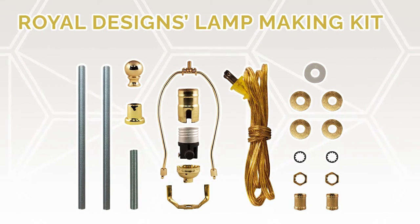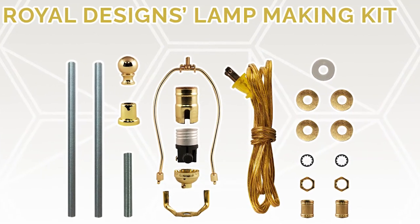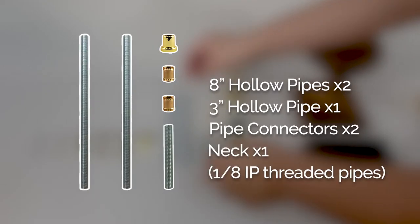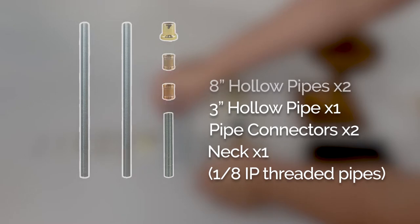The Royal Designs Lamp Making Kit gives you all the parts you need to repair and refurbish old lamps or to create a unique, one-of-a-kind fixture that you'll enjoy for years.